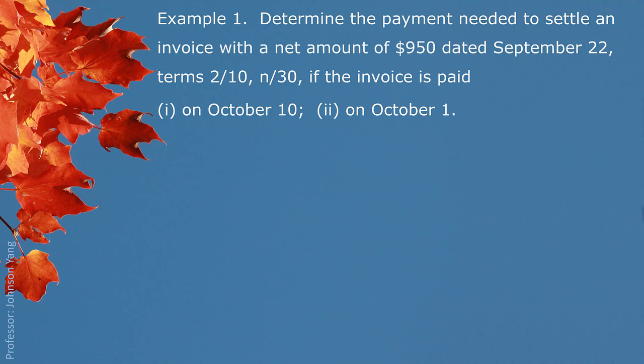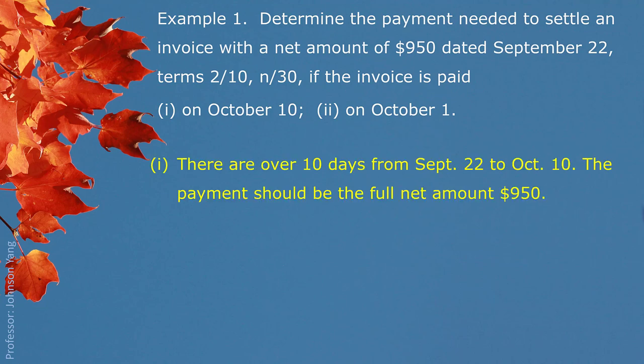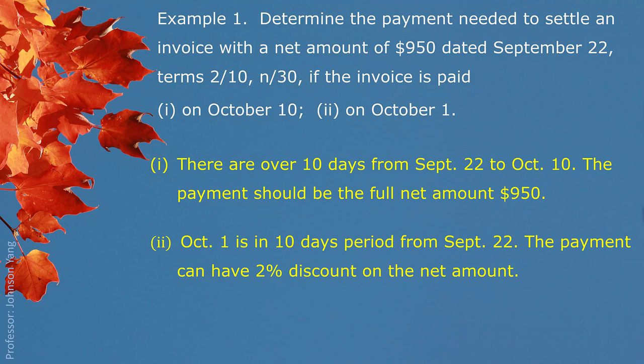Example 1: Determine the payment needed to settle an invoice with a net amount of $950, dated September 22nd, terms 2/10 N30, if paid on October 10 or on October 1st. From September 22nd to October 10 is over 10 days, so the discount period is exceeded and the full net amount of $950 must be paid. If paid on October 1st, which is within 10 days, the 2% discount applies, so the payment is $931.